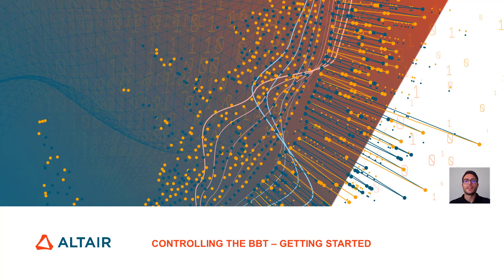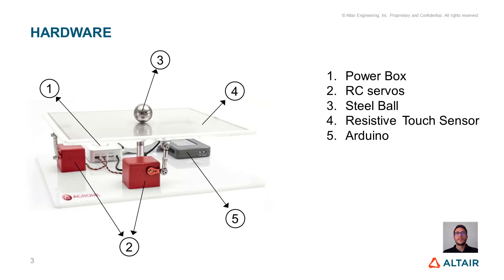Let's start getting familiar with the BBT and let's connect it to Alter Activate. The objective of this mechatronics system is to control the position of the ball. The ball position measured by the touch sensor is fed as input to the controller, which comparing it with a reference produces an error signal. This error signal is converted according to a certain control logic into a command which drives the RC servos. The movement of the RC servos is transmitted to the table through rod-end bearings, allowing the ball to follow the set reference.